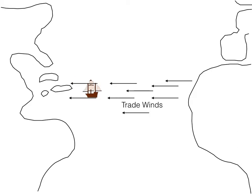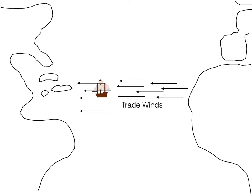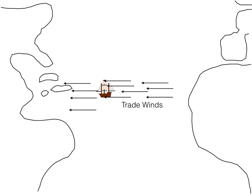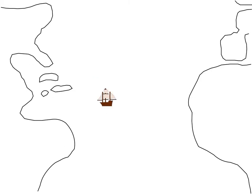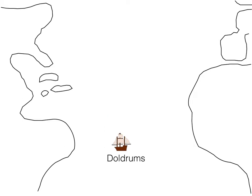They would not take the same path back because they would be fighting the same trade winds. And they wouldn't go south because they would hit a place of latitude called the Doldrums, where there would be no wind and very hard work to get across the Atlantic.